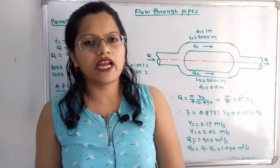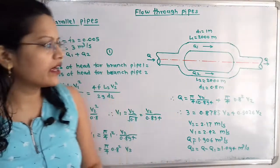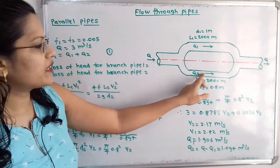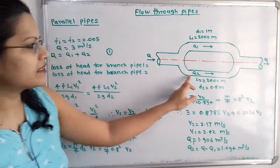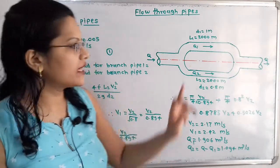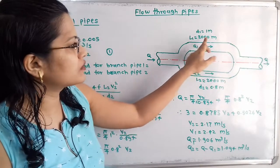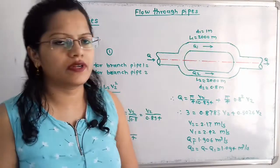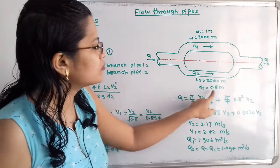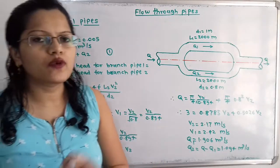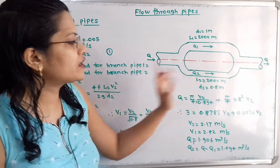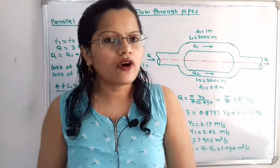Looking at the diagram, a single pipe divides into two branch pipes — pipe 1 and pipe 2 — which then rejoin. The given data: for branch pipe 1, length L1 = 2000 meters and diameter D1 = 1 meter; for branch pipe 2, length L2 = 2000 meters and diameter D2 = 0.8 meters. We need to find the discharge in branch pipe 1 and pipe 2, that is Q1 and Q2.